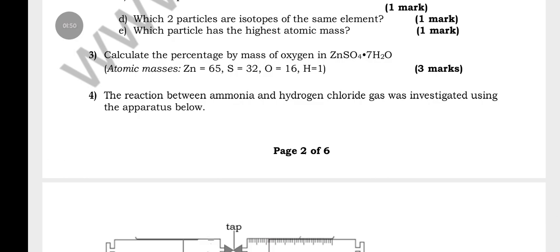You are asked to calculate the percentage by mass of oxygen in zinc sulfate, ZnSO4·7H2O. The atomic masses given are: Zinc 65, Sulfur 32, Oxygen 16, and Hydrogen 1.